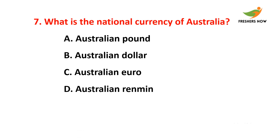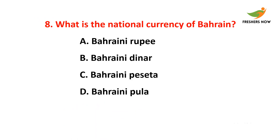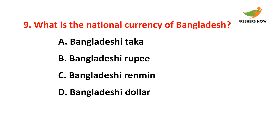Seventh question: What is the national currency of Australia? The answer is option B — Australian dollar. Eighth question: What is the national currency of Bahrain? The answer is option B — Bahraini dinar.